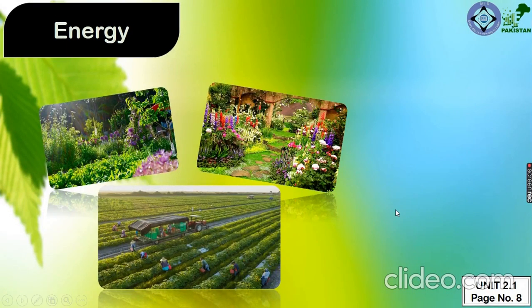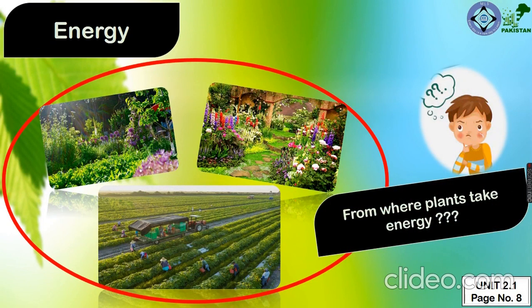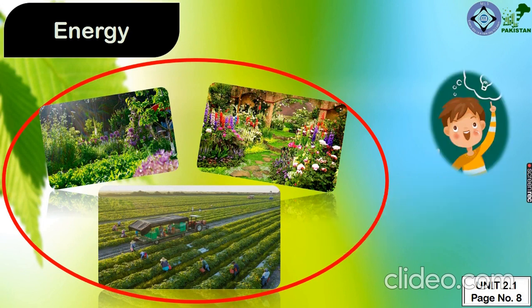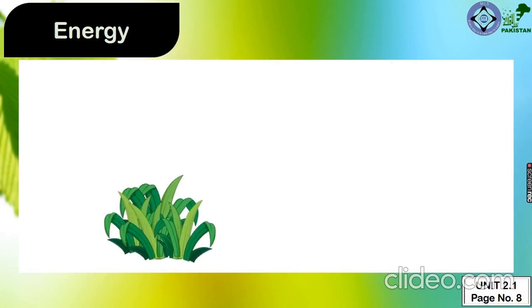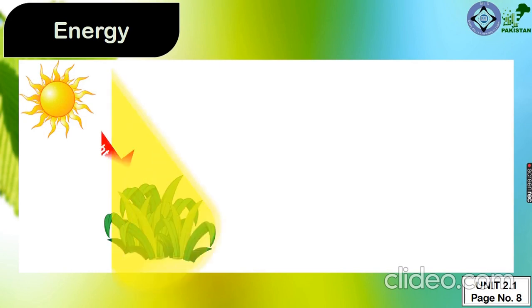But now the question is, from where do plants take energy? Yes, exactly from the sunlight. So the process of getting food is: plants are the main source of energy for many of us, and plants take energy from the sun in the form of sunlight.